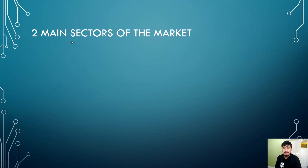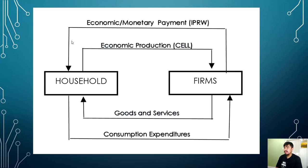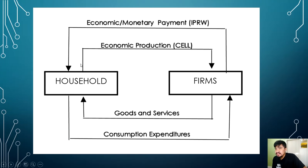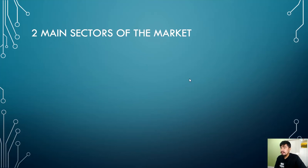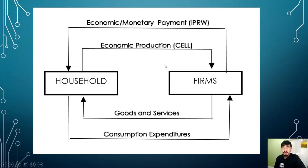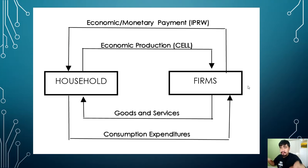To further understand economics, we have to look at a diagram showing the two main sectors of the market. Looking into the cycle, this is basically the market, wherein we look into the exchange and trade of goods and services. The two main sectors of the economy are your household and firms — the two sectors of our market.